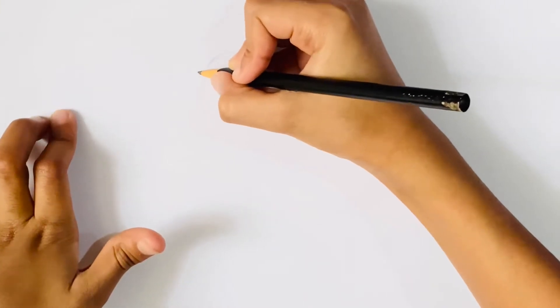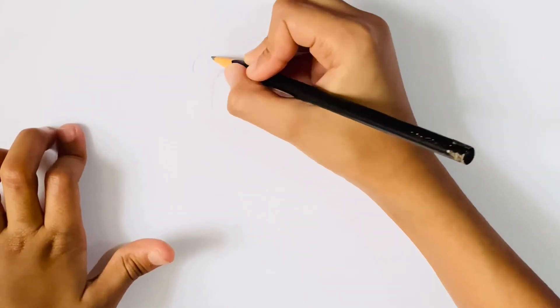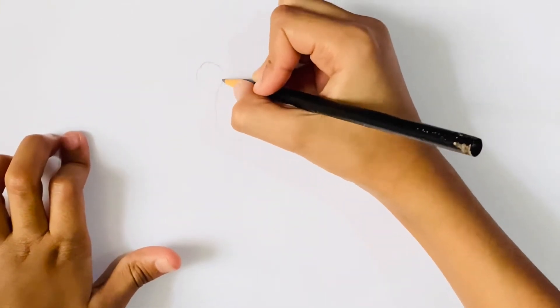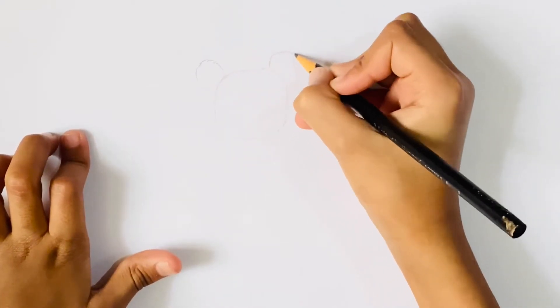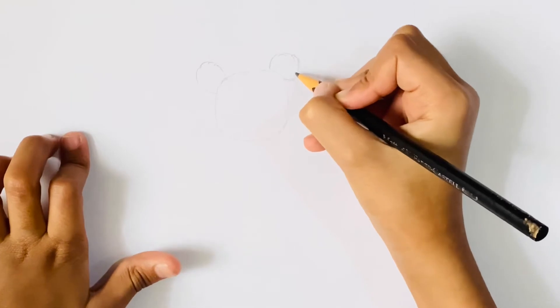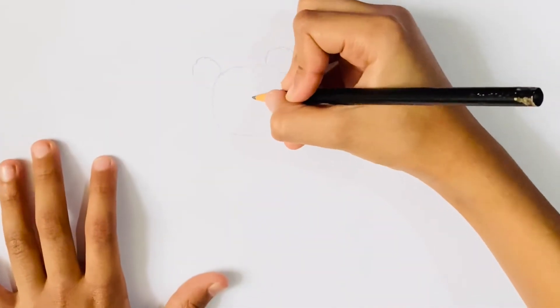Now let's draw the ears. First draw two circles. Now let's draw the eyes.